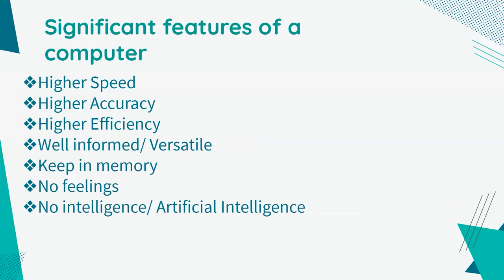The next feature I'm going to talk about is the versatility of a computer. Versatility is a characteristic of a computer. This is the capacity to perform completely different types of work simultaneously, such as playing videos, downloading, running the internet, and so on. The computer is capable of doing all these instructions because of this feature.